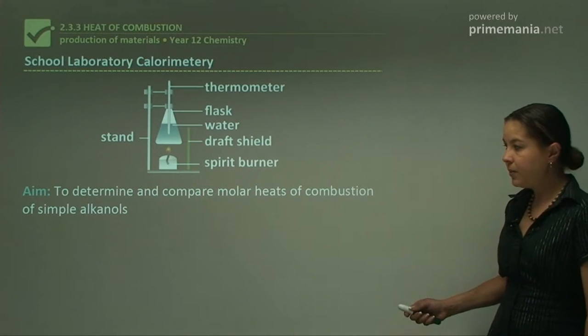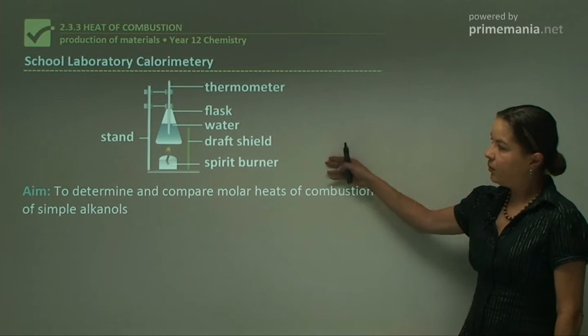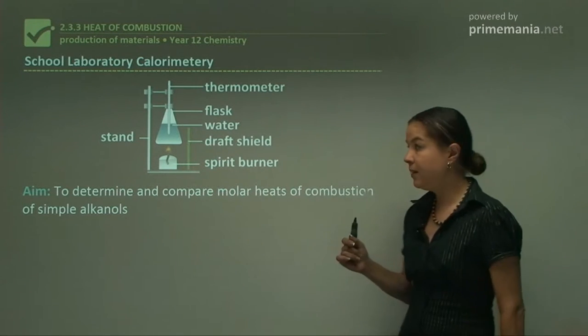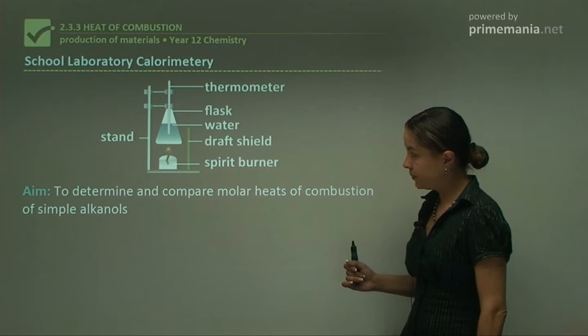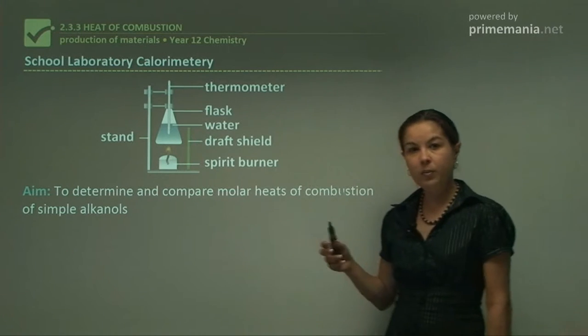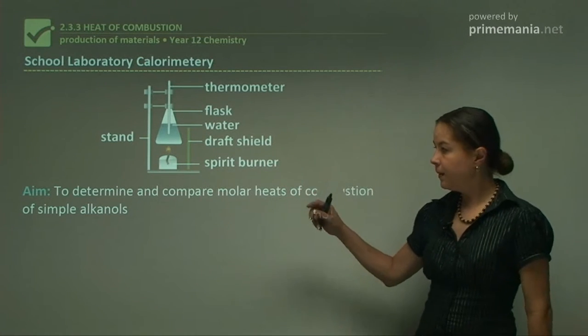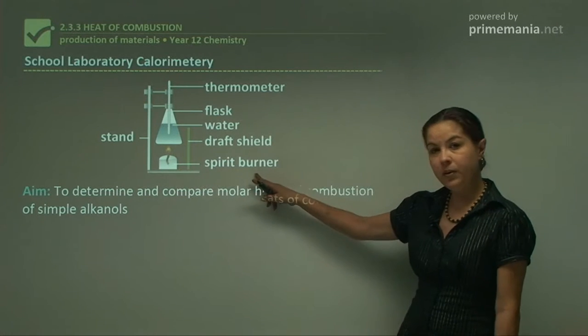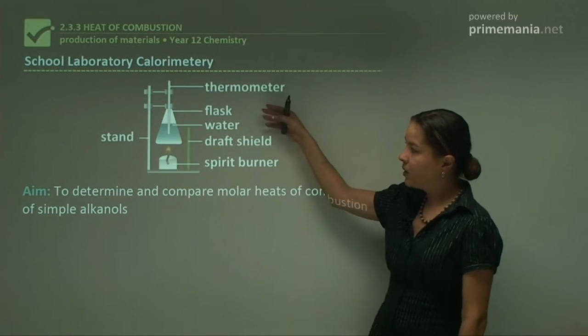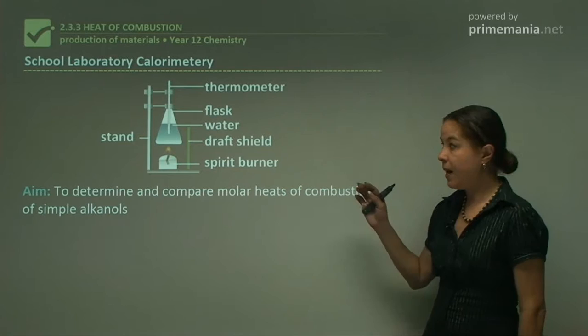Our aim for this experiment is to determine and compare the molar heats of combustion of simple alkanols. Just to quickly recap, what we have here is our apparatus. We have a stand with a clamp which is holding a flask here, in this case a conical flask, and this is our calorimeter. We also have a thermometer to measure the temperature difference in the water, and the water will be of constant volume. We have to use a draft shield because we're burning the alkanols in this little spirit burner, and if we have too much draft or wind, you'll have less reliable heat source. That's our basic calorimetry apparatus for this experiment.